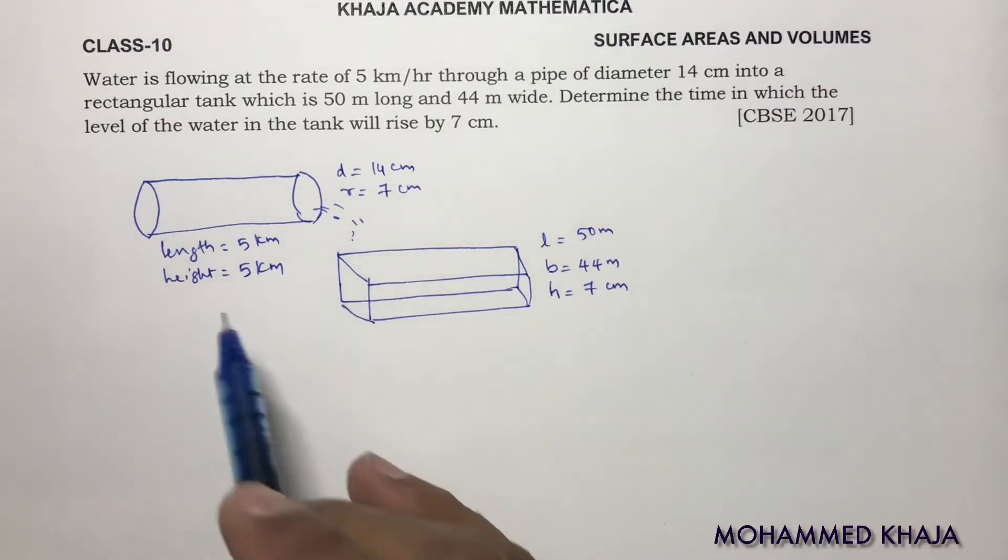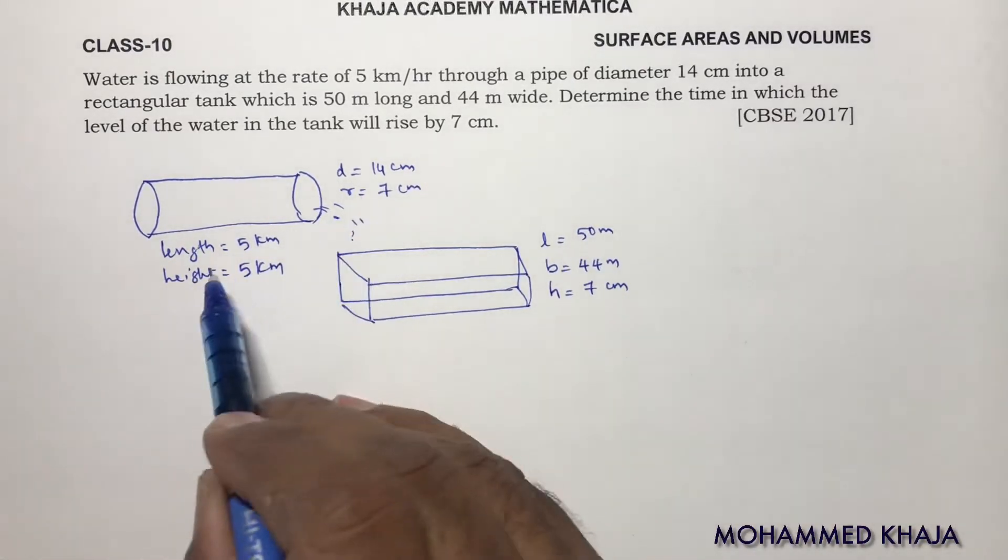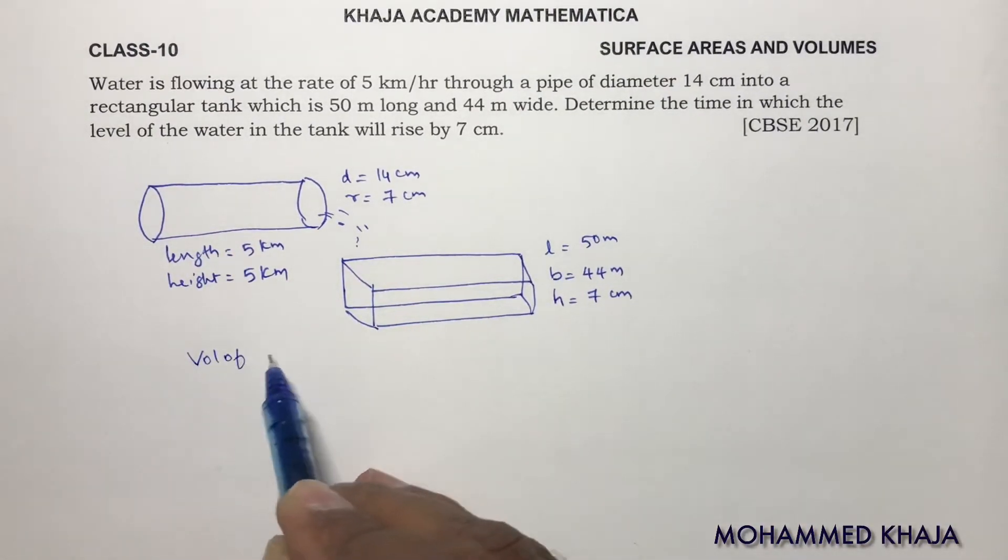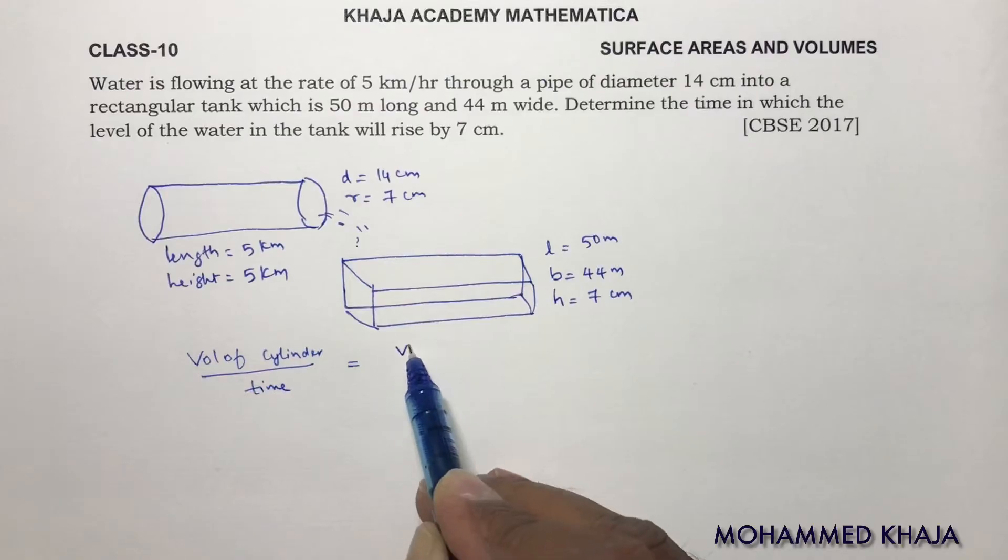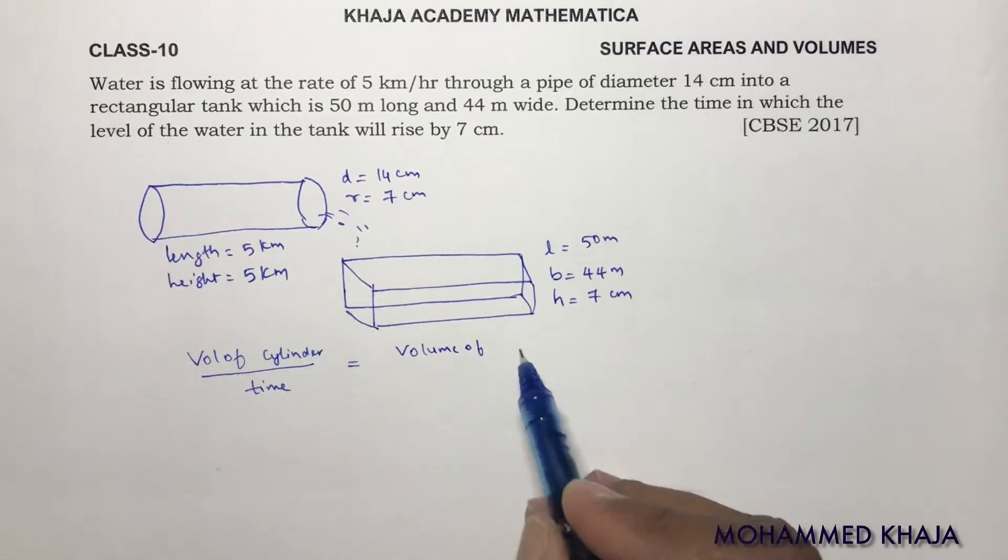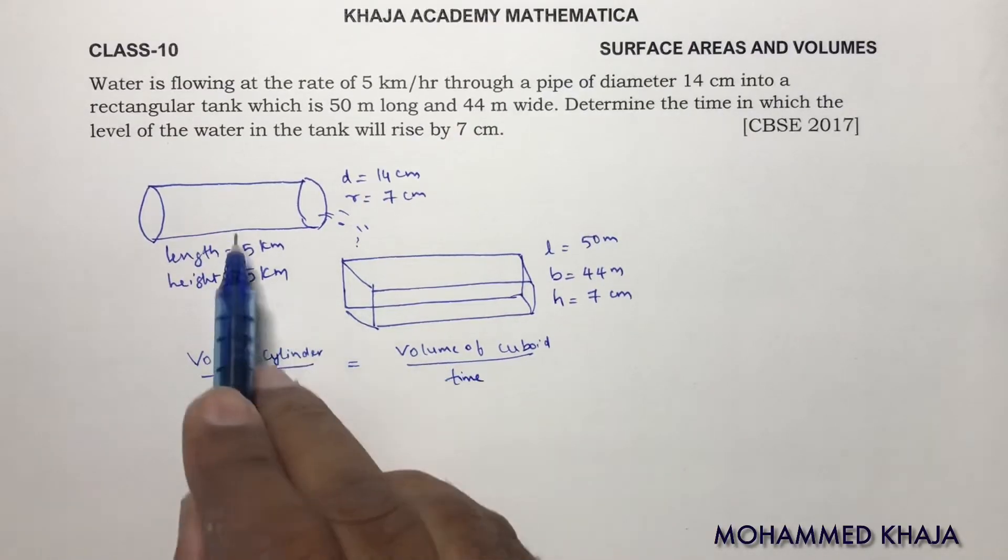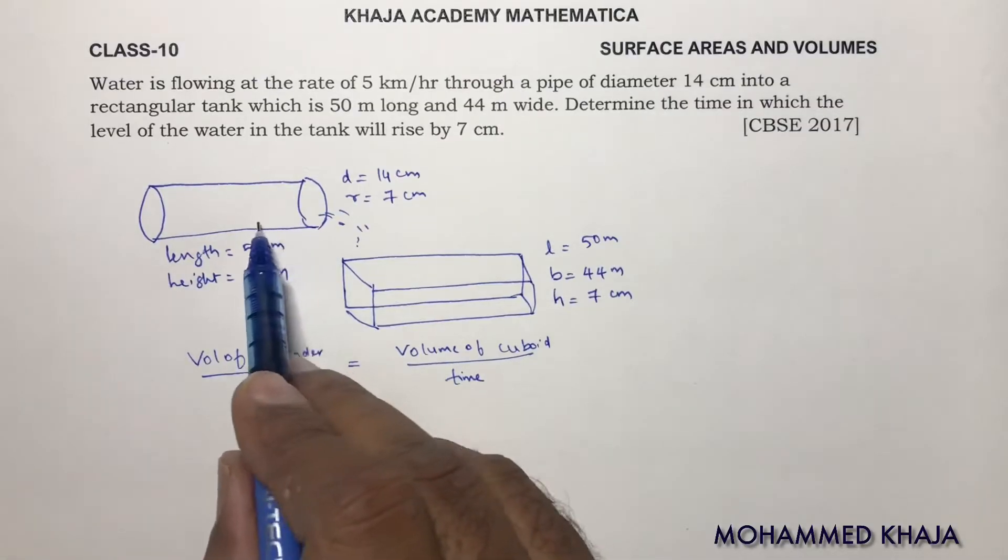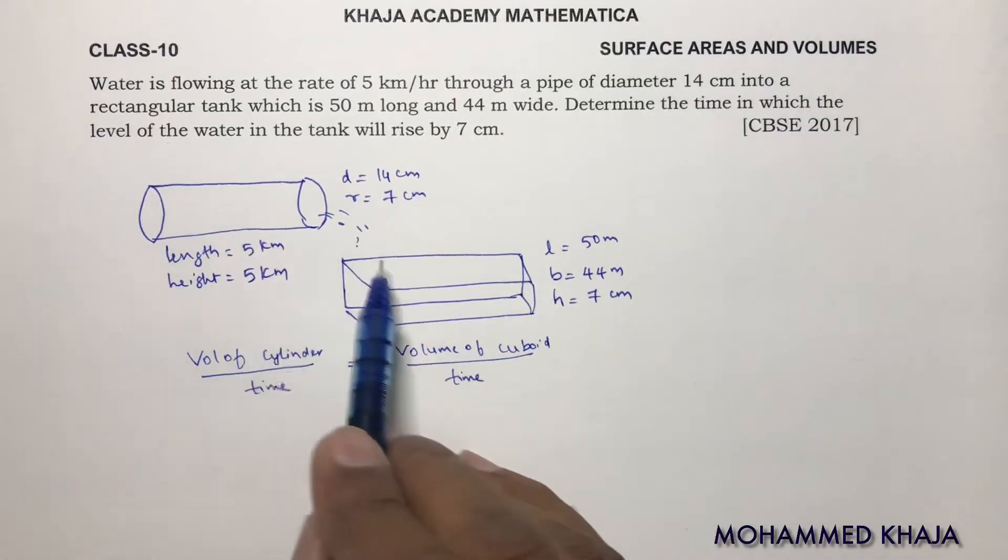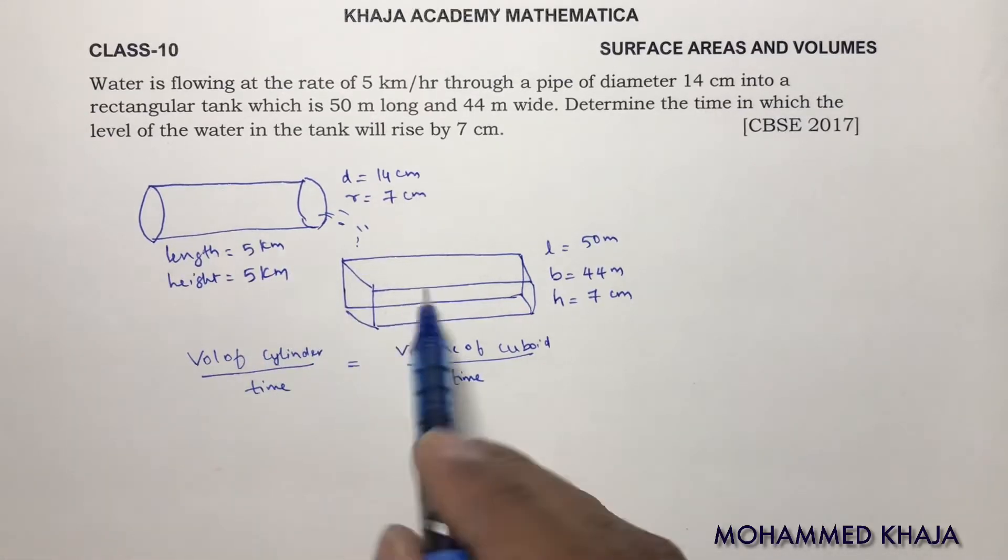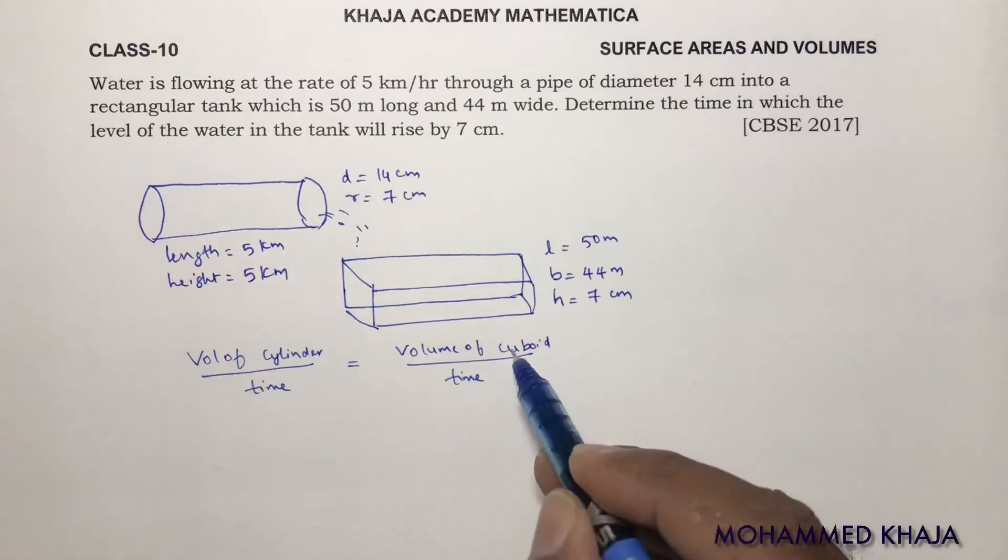So in the same way, here radius is 7, height is 5. This problem, volume of cylinder by time equals volume of cuboid by time. Because this is flowing 5 km per hour. So this tank will take how much time, because the volume will be same. Same water flows into this rectangular tank. So volume by time equals volume by time.